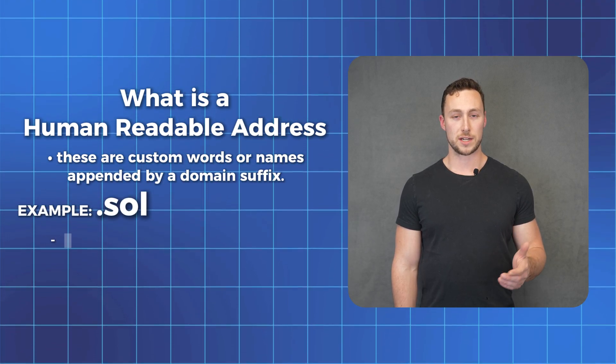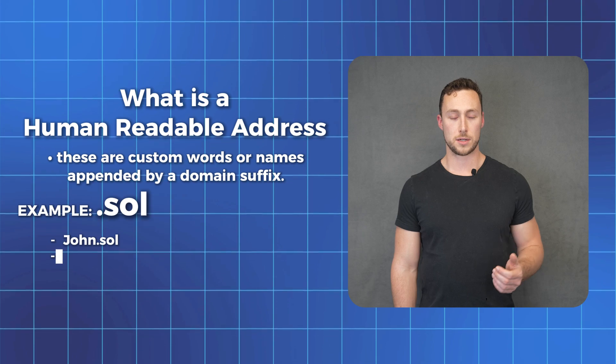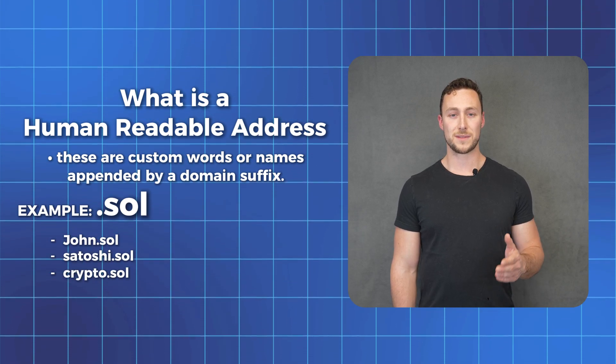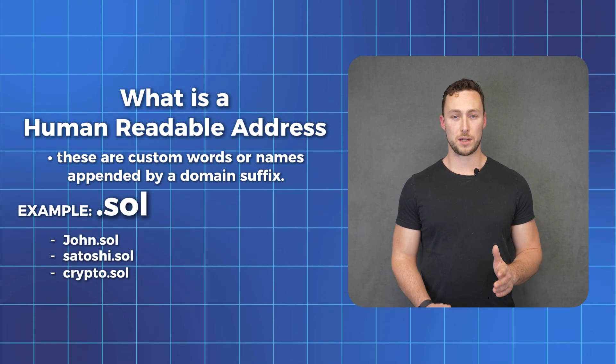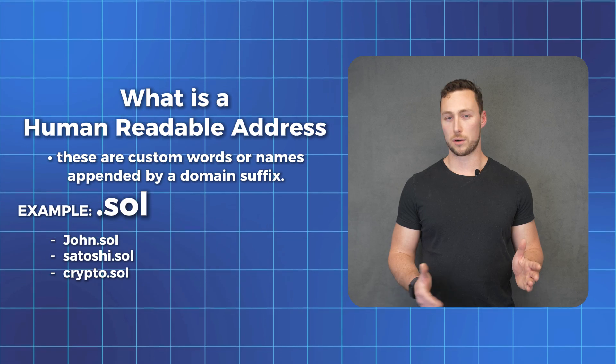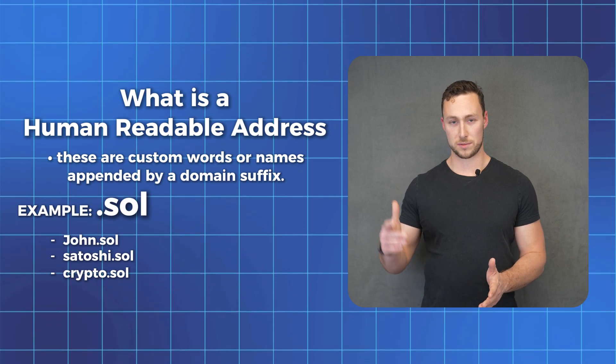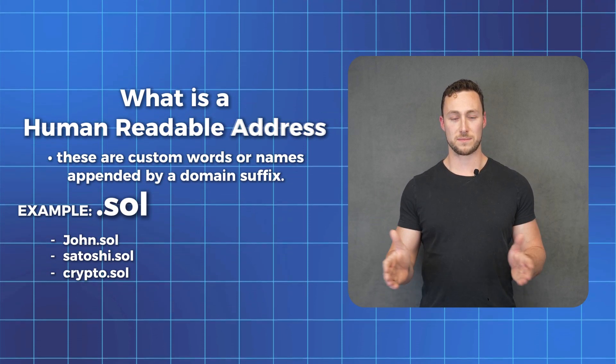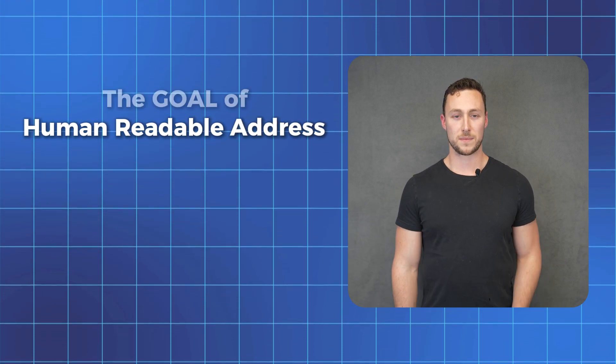In this case, .sol — john.sol, satoshi.sol, crypto.sol — these are all examples of human-readable names. Note that I don't actually know who owns those specific examples, so please don't send any money to them.